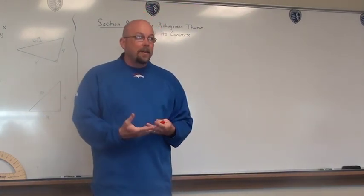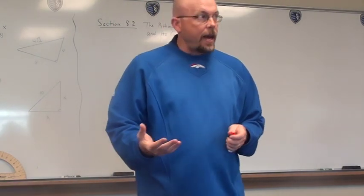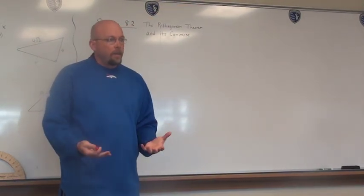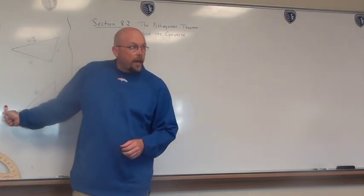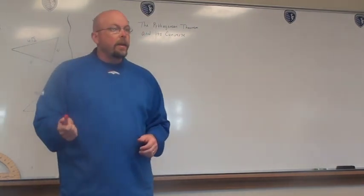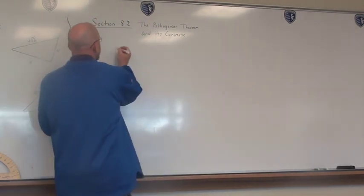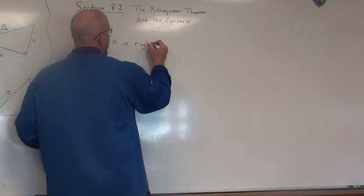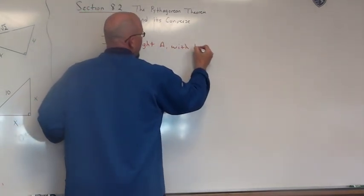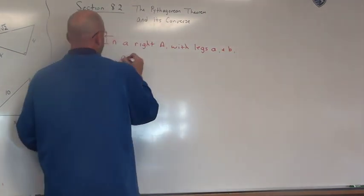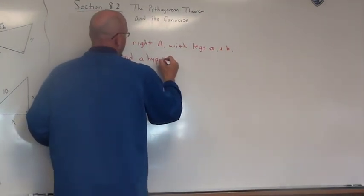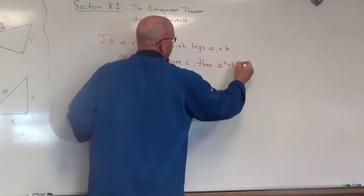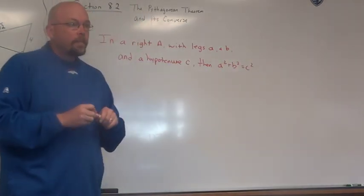We're going to do that with the Pythagorean Theorem today, as well as explore some other theorems that we use the Pythagorean Theorem for. The Pythagorean Theorem says: in a right triangle with legs A and B and a hypotenuse C, then A squared plus B squared equals C squared. That's the Pythagorean Theorem.